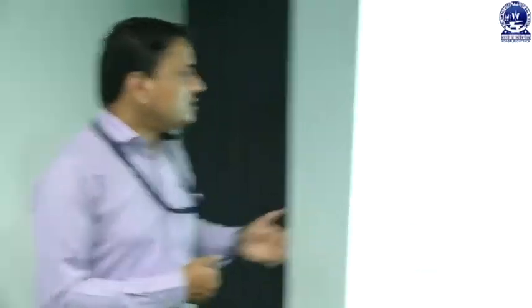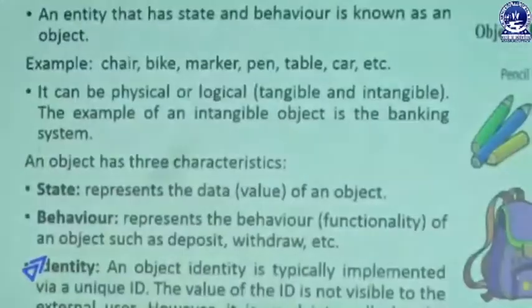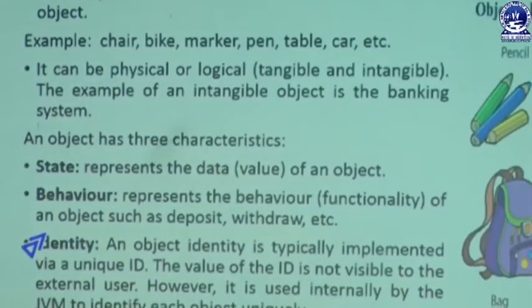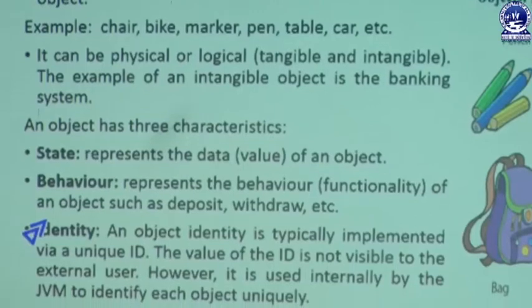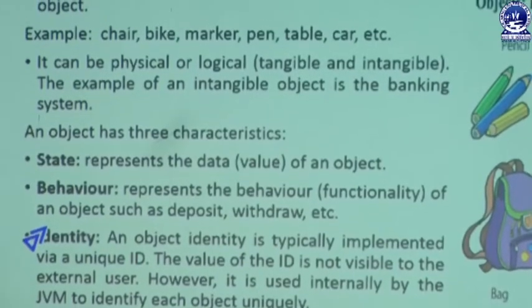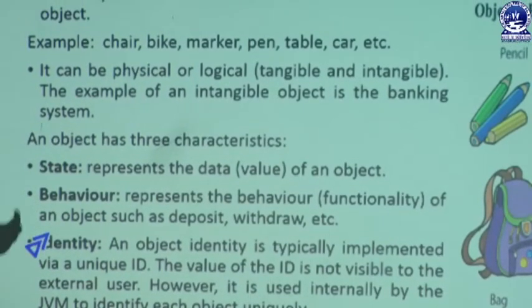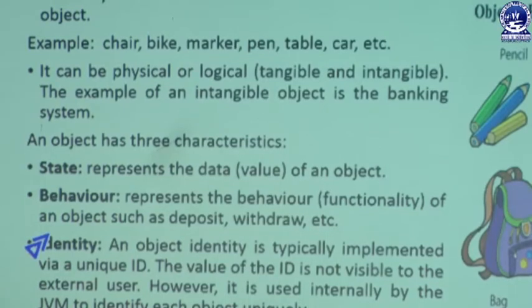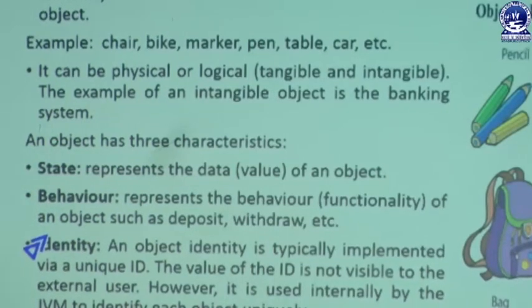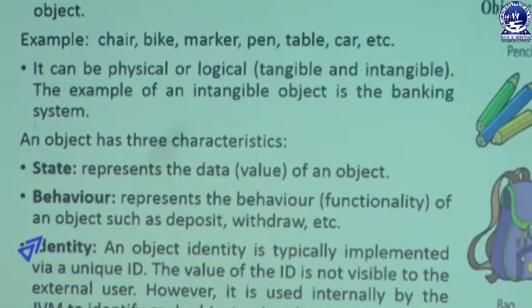We also have the concept related to intangible objects. For example, a banking system is known as an intangible object. Tangible objects include chair, bike, marker, pen, pebble, and car — these are known as tangible objects.